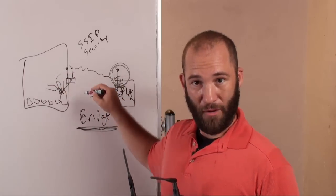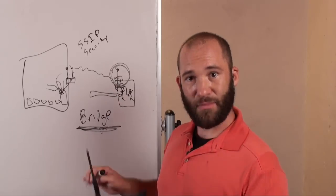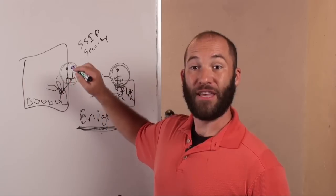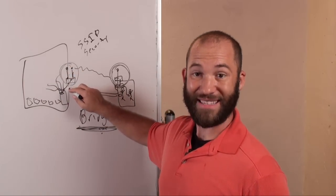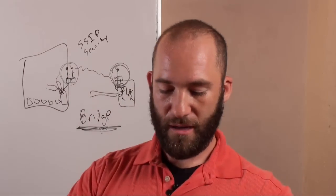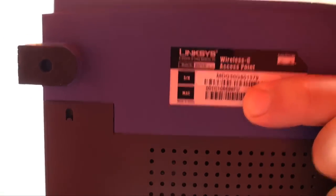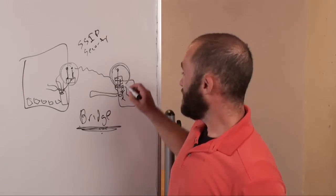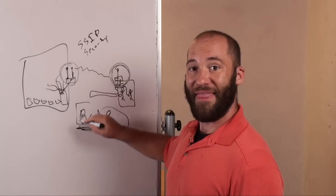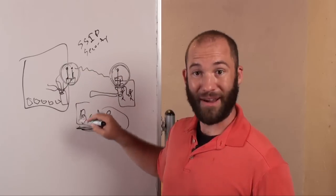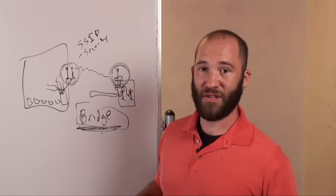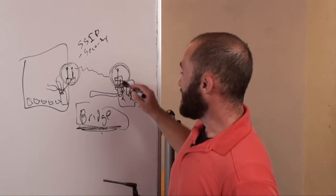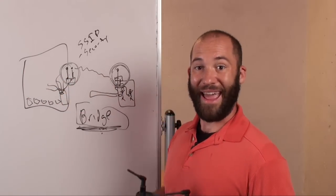Once you've set up bridge mode, the next thing the wireless access point will ask you is: what is the MAC address of the wireless router or access point you are trying to connect to? You'll have to go to that wireless device and find its MAC address — all networking equipment should have a MAC address on the bottom. So on the remote access point, you put it into bridged mode and give it the MAC address of the access point it's trying to connect to. It may also ask for the SSID and security. Once you've done that, everything is essentially set up.